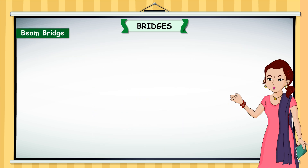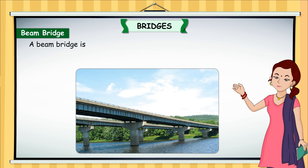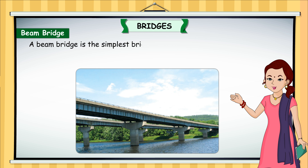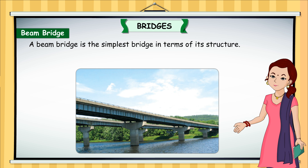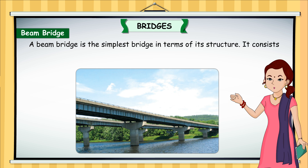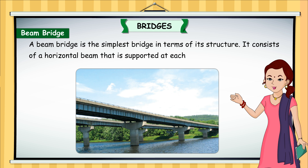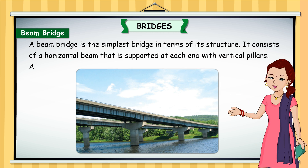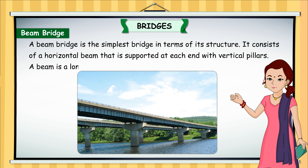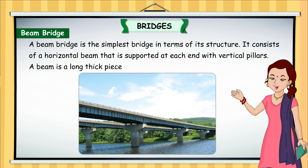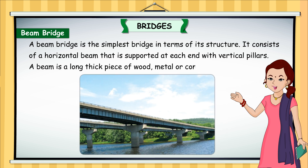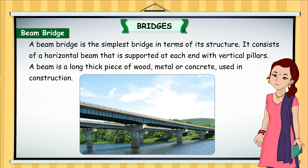A beam bridge is the simplest bridge in terms of its structure. It consists of a horizontal beam that is supported at each end with vertical pillars. A beam is a long, thick piece of wood, metal or concrete used in construction.